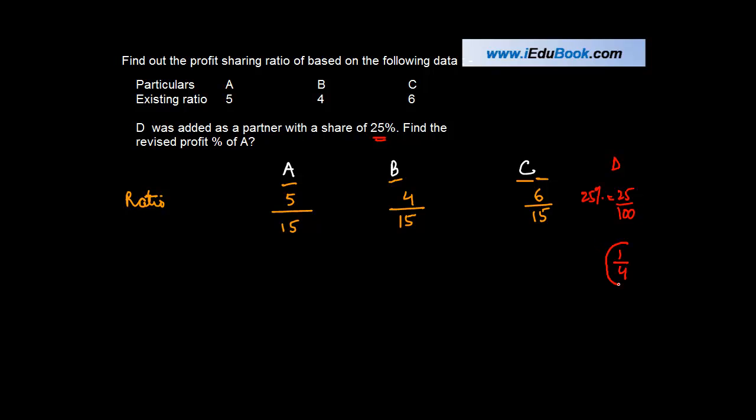So once D has got one fourth of the profits, what is the share of all these three taken together? The share of all these three taken together is 1 minus 1 upon 4. 1 represents 100 percent. Or 4 minus 1, 3 upon 4. So the share of the other three partners is 3 upon 4.